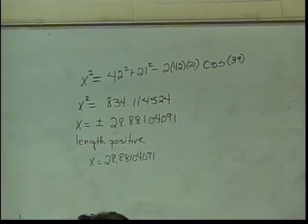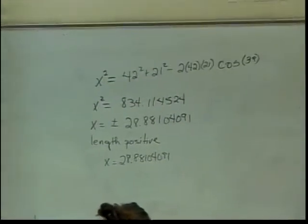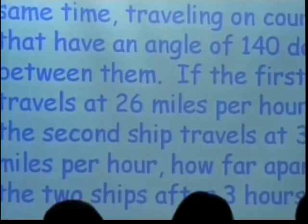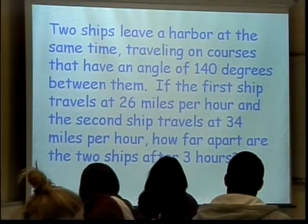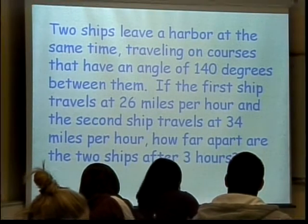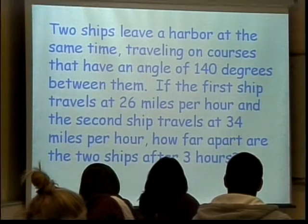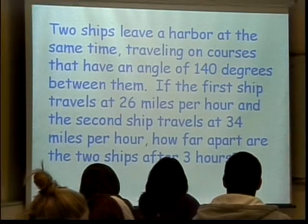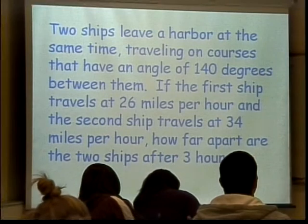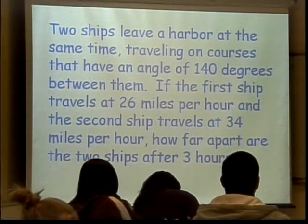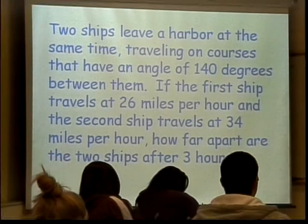How are we doing on time? Oh, we're doing great. Now, word problems. Two ships leave a harbor at the same time, traveling on courses that have an angle of 140 degrees between them. If the first ship travels at 26 miles per hour and the second ship travels at 34 miles per hour, how far apart are the two ships after three hours? Yeah, you feel like you're reading about trains, don't you?